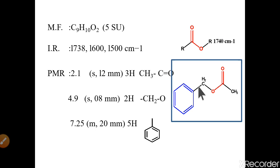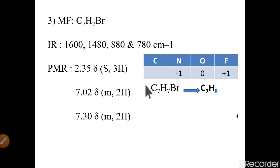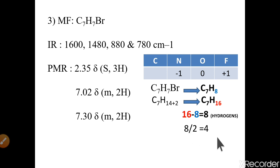Let's go to the next problem: C7H7Br. This is a bromo-containing compound. To calculate degrees of unsaturation with a halogen, we add one hydrogen to the formula. C7H7Br becomes C7H8 after replacing Br with H. The saturated formula for 7 carbons is C7H16. So 16 minus 8 gives 8 hydrogens difference, and 8 divided by 2 equals 4 degrees of unsaturation.